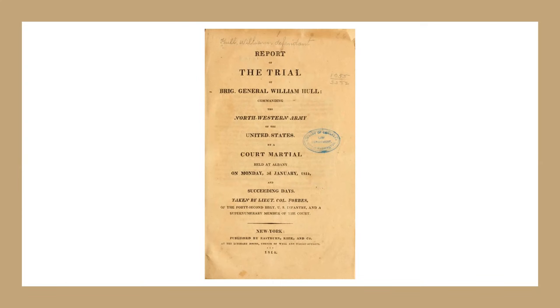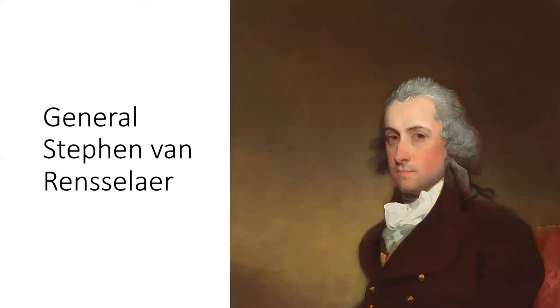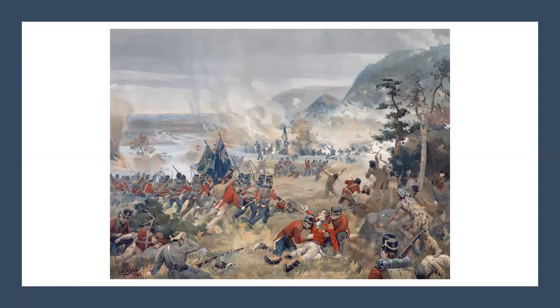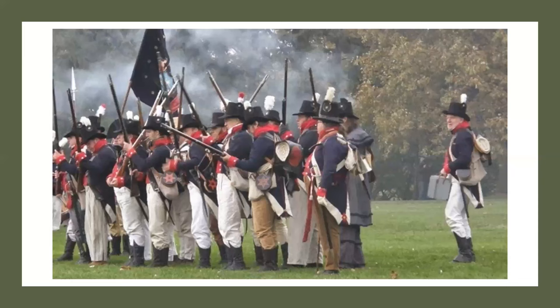The next major engagement was in October 1812, when the Americans led by General Stephen Van Rensselaer attempted to cross the Niagara River. The British were victorious at the Battle of Queenston Heights, but General Brock died in action. Reinforcements had made a difference for the British, and several thousand New York militia refused to continue fighting. The New York reservists declared their willingness to defend their homes, but not to fight on Canadian soil.